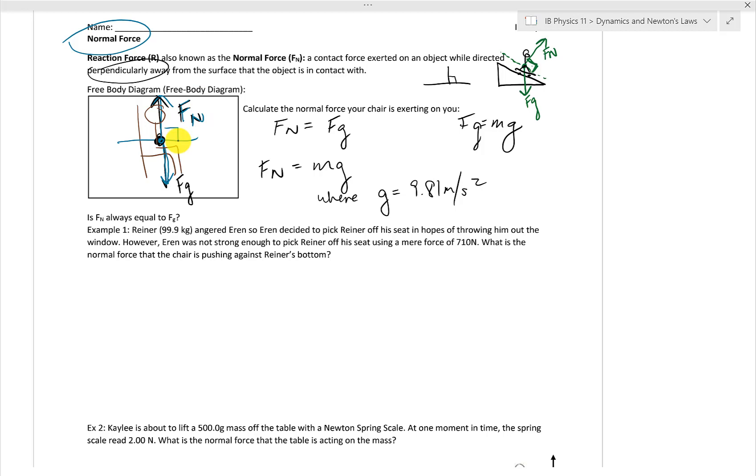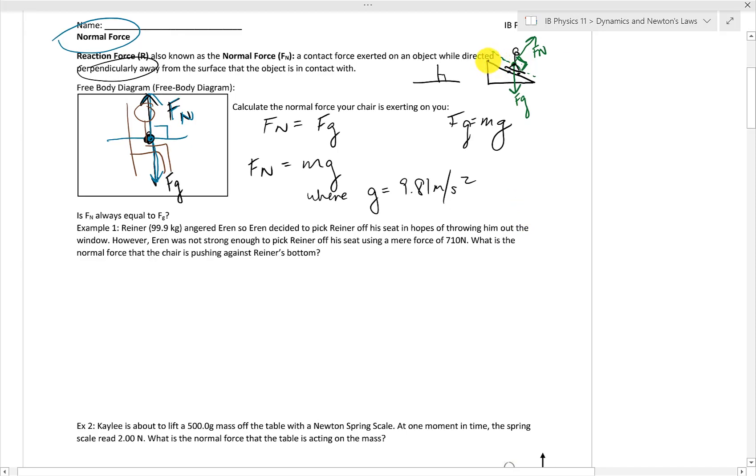Sometimes surfaces are not horizontal, they may be vertical, they may be on an angle, such as I have an example here where I have an incline. We will talk about inclines more later, but notice that the Fn might not act always in the upwards direction, it might change depending on what your surface is. But it always does act perpendicular to your surface.